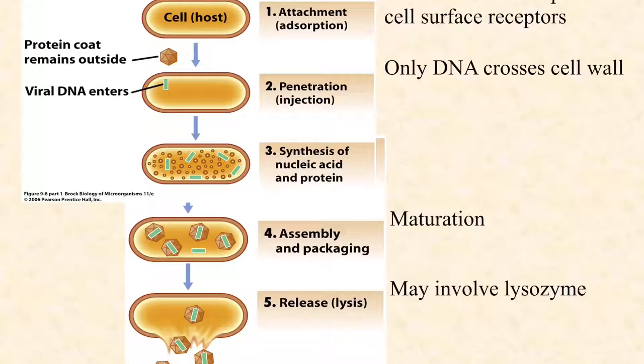Let's talk about the lytic life cycle. There are two life cycles to phage: lytic and lysogenic. The lytic cycle results ultimately in lysis of the cell. In step one — typically called attachment, or adsorption — the phage virion, which has double-stranded DNA, uses its tail fibers to attach to a specific molecule on the surface of the host cell. Attachment is where host specificity is determined — for example, where a T-even phage like T4 distinguishes an E. coli cell from a Bacillus subtilis cell.